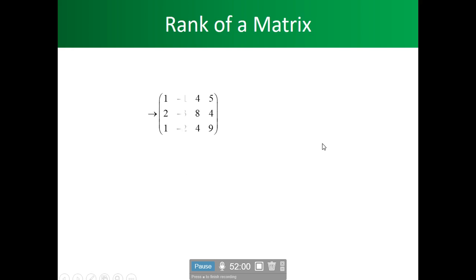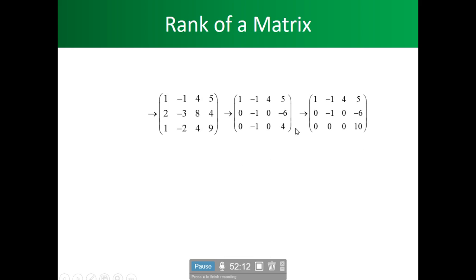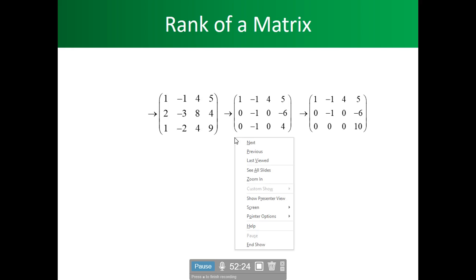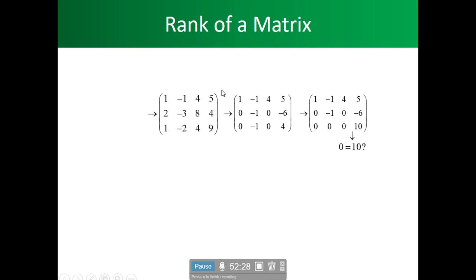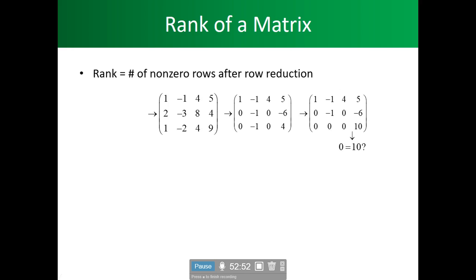Now people want to rank these matrices to determine if you can do anything with them. Look at this: it says zero plus zero plus zero equals ten — that's impossible. Zero plus zero plus zero cannot equal ten, so this matrix is suspect — it's inconsistent and it's not going to work. That's why we try to rank these matrices.